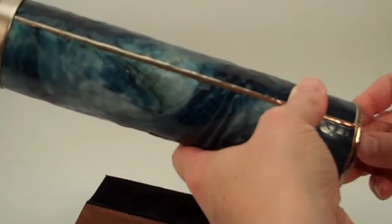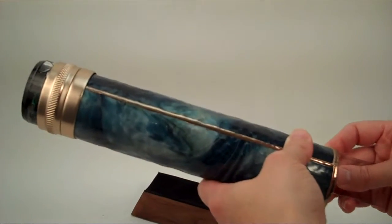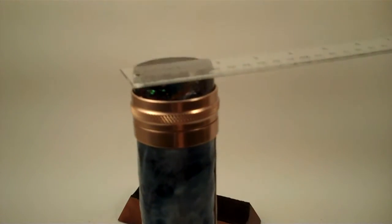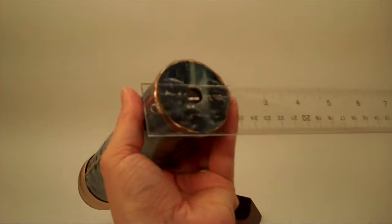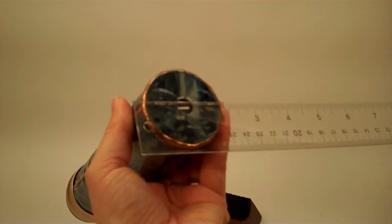The kaleidoscope itself has an overall length of nine and three quarter inches, a diameter at the object chamber of just under two inches, and a diameter at the eyepiece of two inches.